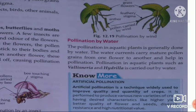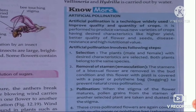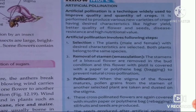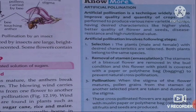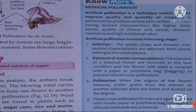Now, artificial pollination. Artificial pollination is a technique widely used to improve the quality and quantity of crops. It is performed to produce various new varieties of crops having desired characteristics like high yield, better quality of flowers and seeds, disease resistance, and high nutritional value.